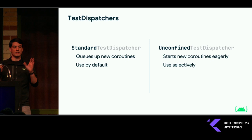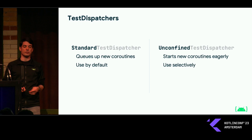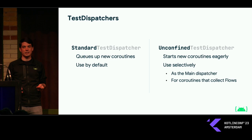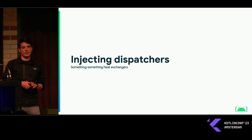To summarize these two dispatchers: Standard has queuing behavior, Unconfined has eager start for coroutines, and you should use Standard by default. But there are use cases for Unconfined as well, such as using it for the main dispatcher and for coroutines that collect flows, which can make your life a bit easier.